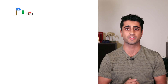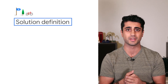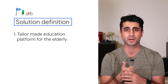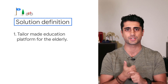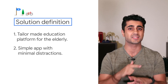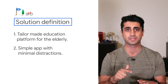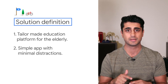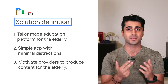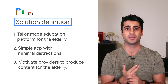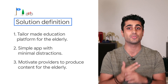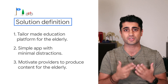Also during the design sprint, we define the solution as: one, build a platform that supports the niche market of elderly education; two, the client app should be simple to navigate and has minimal distractions like notifications or ads; and three, course providers can produce content specifically designed for the elderly, possibly by the elderly, thus providing a revenue stream to a usually underserved demographic.